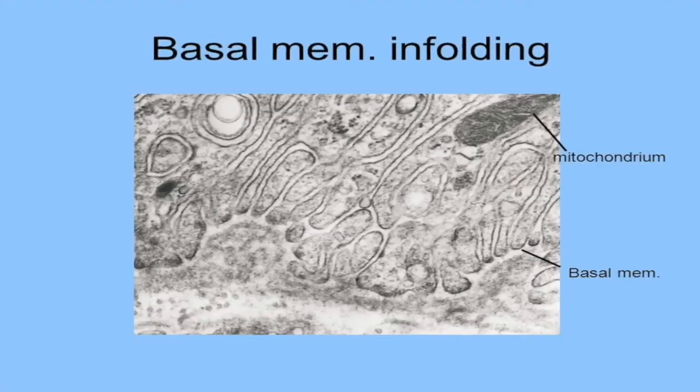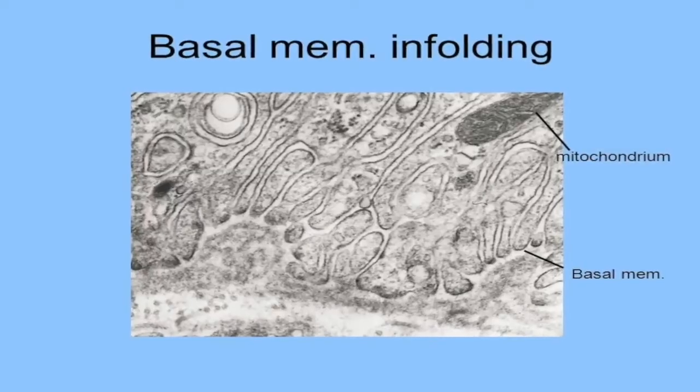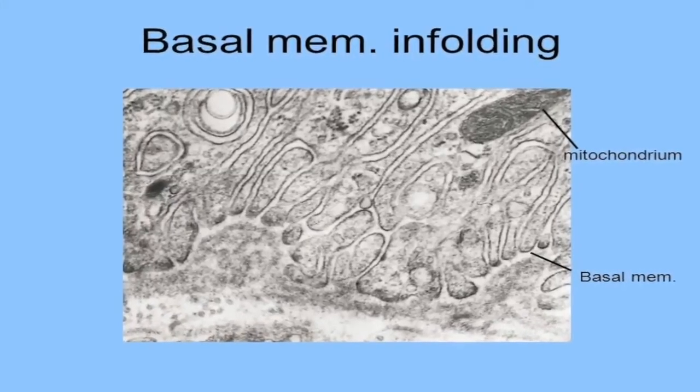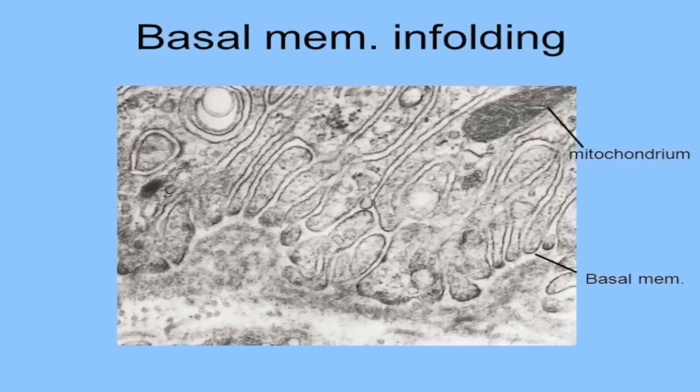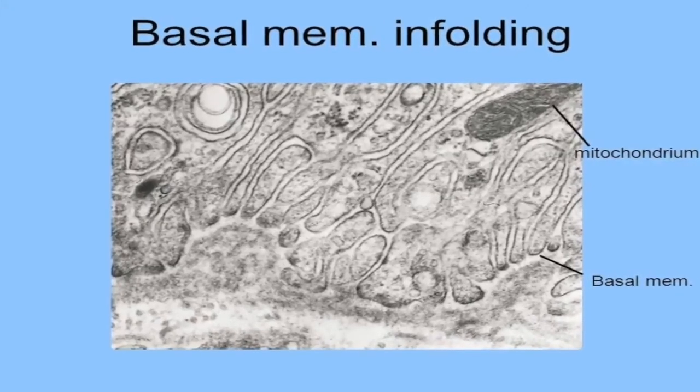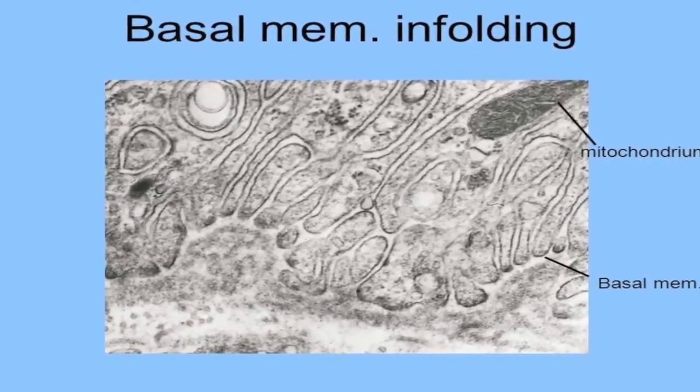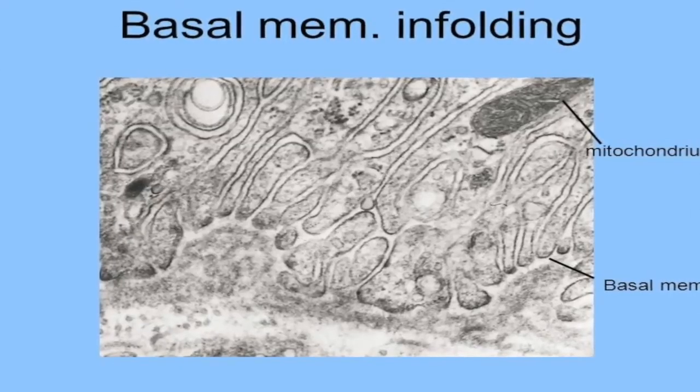Basal enfolding: enfoldings of the basolateral region of the plasma membrane are commonly found in cells engaged in active transport of fluids and ions. These enfoldings increase the surface area available for transport.